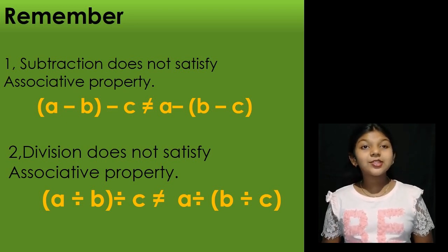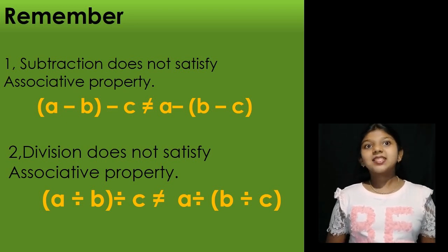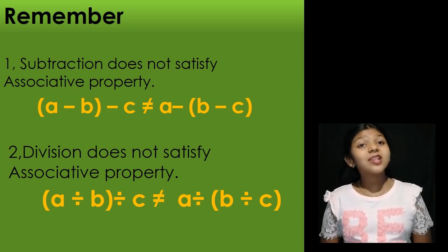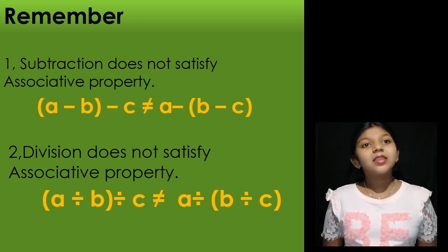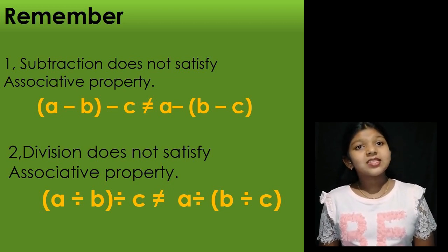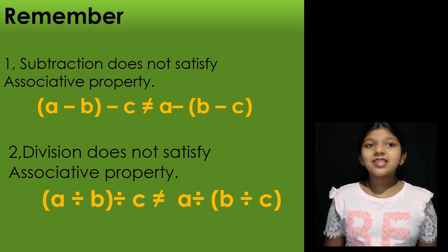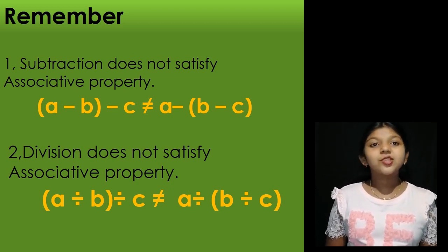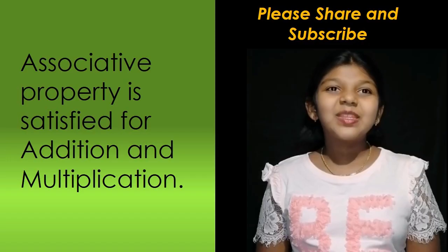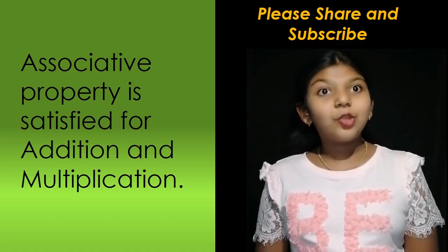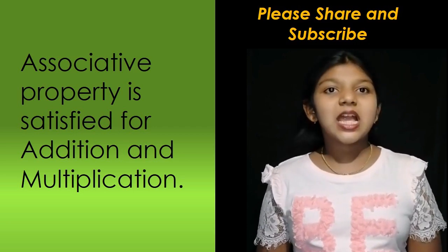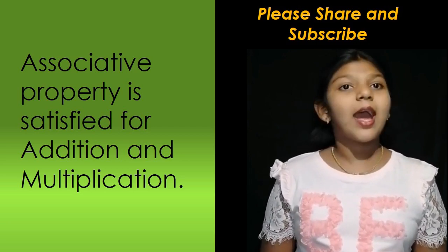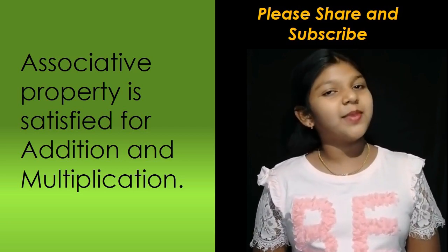It is important to remember that subtraction does not satisfy associative property. Likewise, division does not satisfy associative property. We can conclude that associative property is satisfied for addition and multiplication.